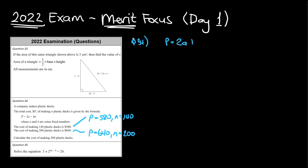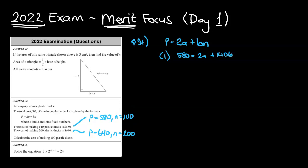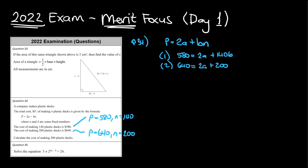So the formula we've been given is p is equal to 2a plus bn. Equation number one: p, which is 580, will be equal to 2a, and since n is 140, it's going to be plus 140b. We can then do the same for equation number two — we've got 640 and 200. So we've got 640 is equal to 2a plus 200b. I'm liking this because I've got 2a present in both equations. If I subtract one from two, the a's are going to go away, leaving me with b, and I can go ahead and solve it.